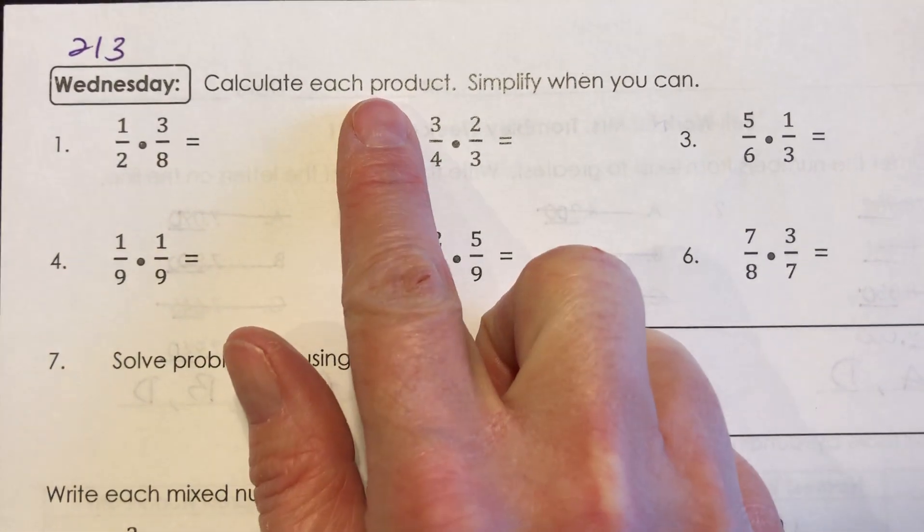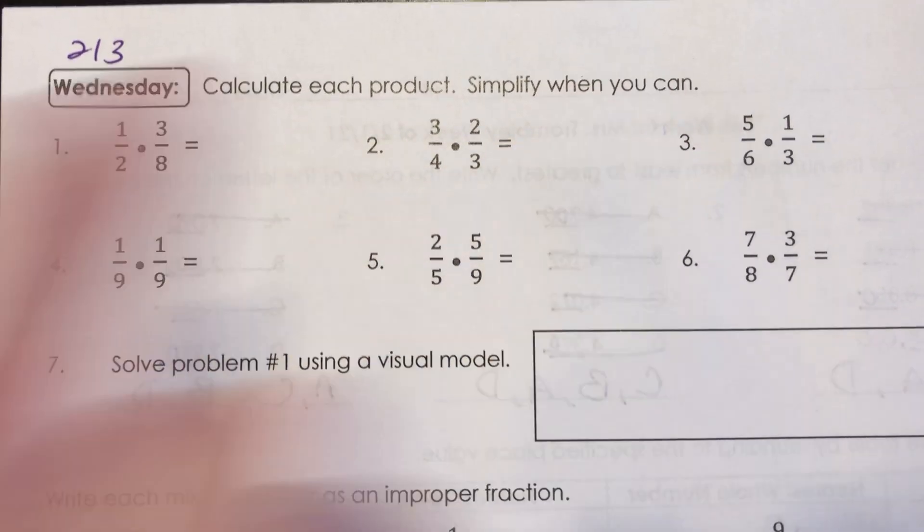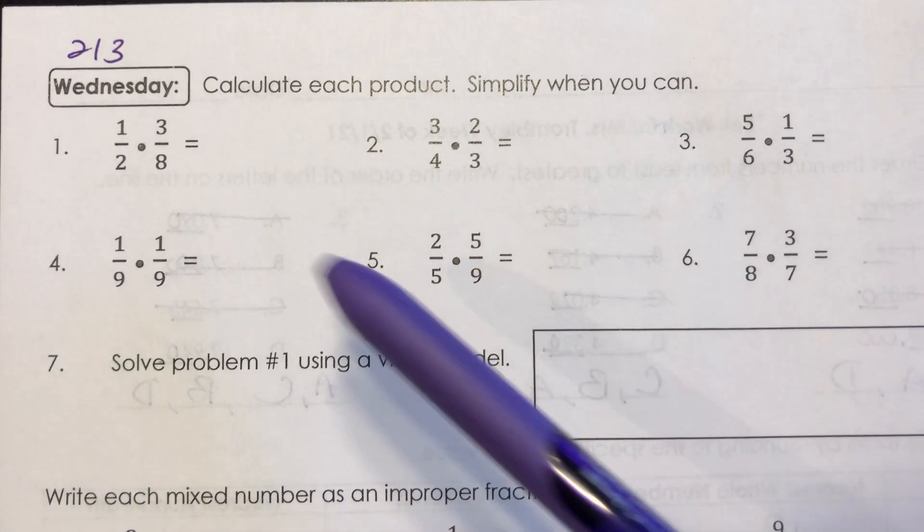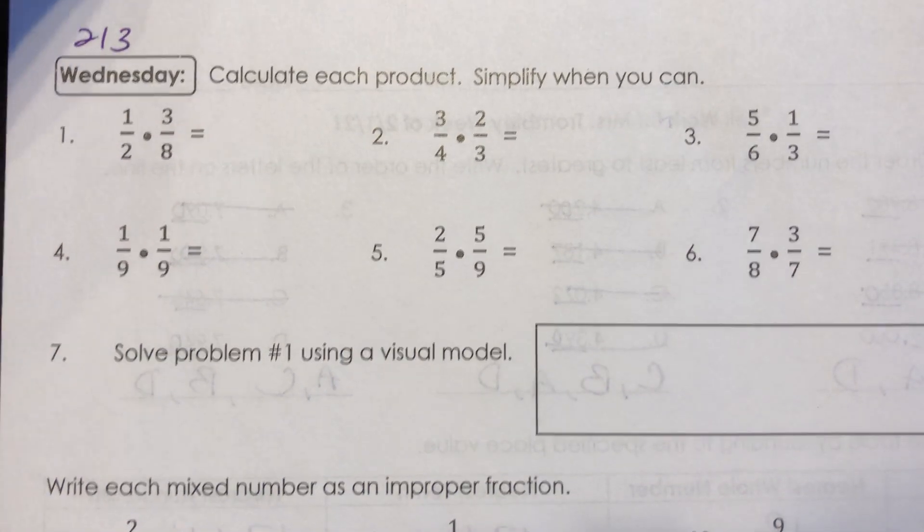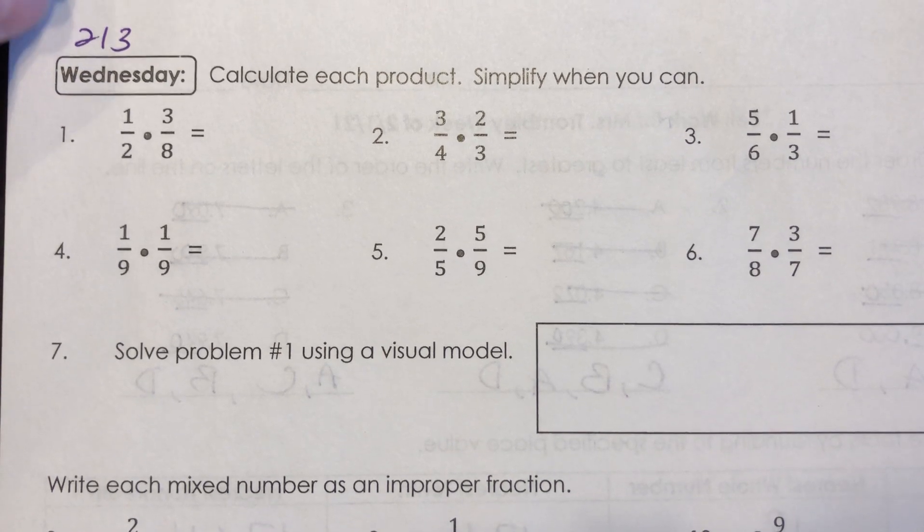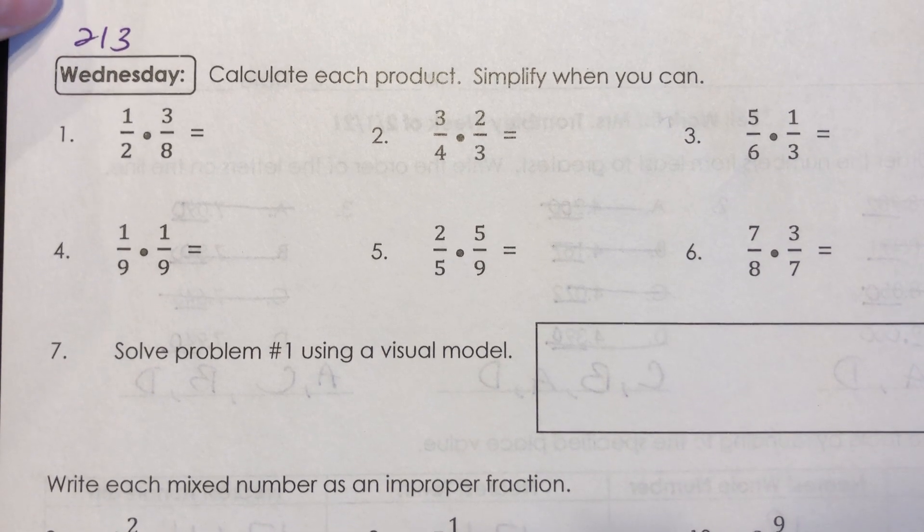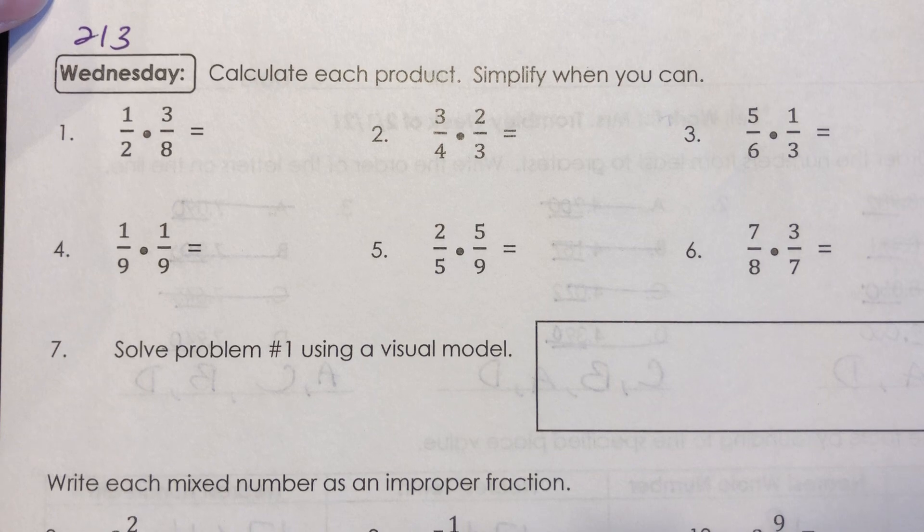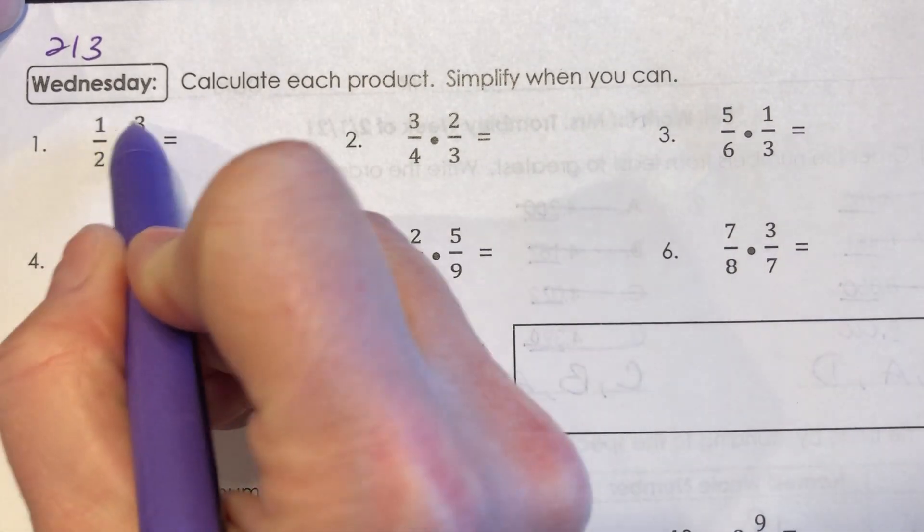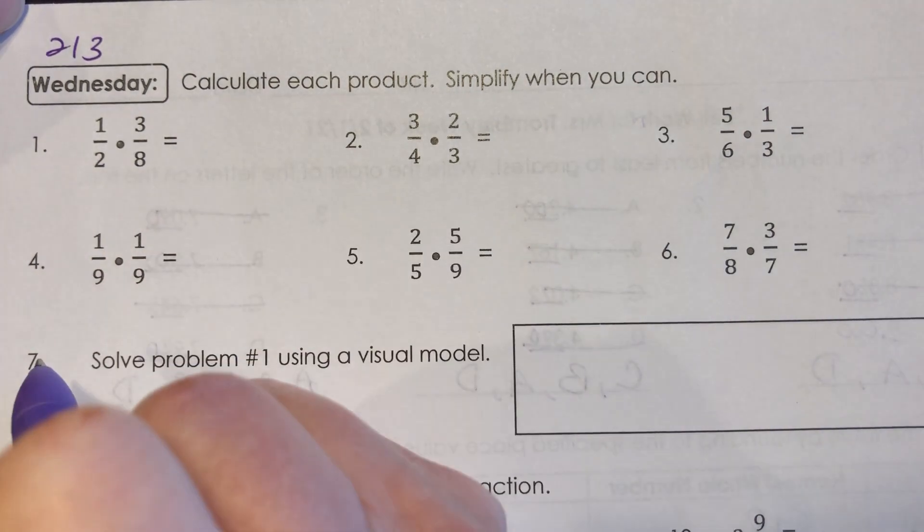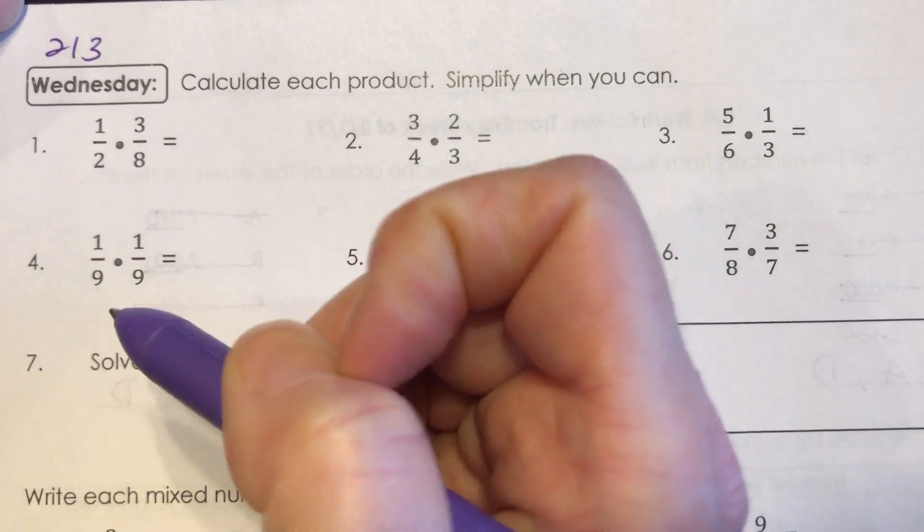To start off, I ask you to calculate each product and simplify when you can. It means if your answer is not in simplest form, write it in simplest form. We saw earlier this week that when you are multiplying fractions, we use the area model so you can see the visual, but we learned that the standard algorithm is we can multiply across the top, multiply across the bottom and simplify. That will get us to our answer.